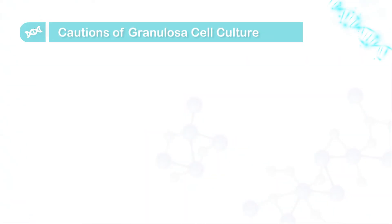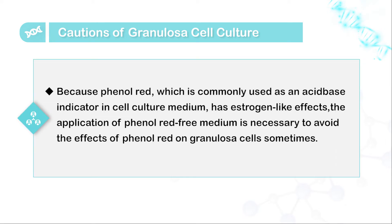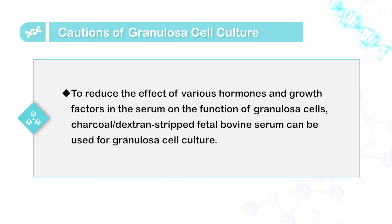The following points in granule cell culture require special attention. First, because phenol red, which is commonly used as an acid-base indicator in cell culture medium, has estrogen-like effects, the application of phenol red-free medium is necessary to avoid the effects of phenol red on granule cells. Second, to reduce the effects of various hormones and growth factors in the serum on the function of granule cells, charcoal-dextran-stripped fetal bovine serum can be used for granule cell culture.